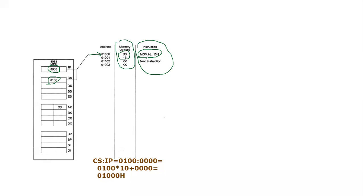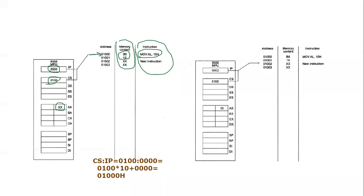The instruction is MOV AL, 15h. What is going to happen is 15h will be moved into the AL register. AL is the lower byte of the AX register. We can see that we don't know the current value of AL — it is marked as XX. But if we execute this instruction, since these two bytes are consumed, the IP will now point to the next instruction at address 01002h and the IP value is updated.